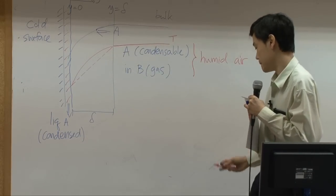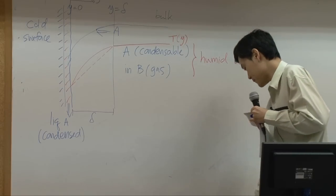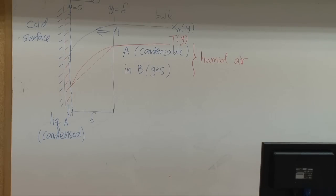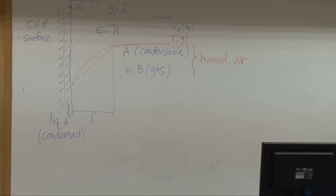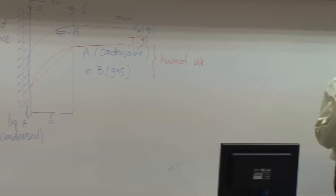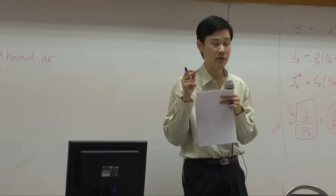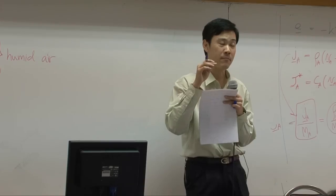So T is a function of Y, and the top one is concentration XA as a function of Y. In this problem, you have mass and energy transport at the same time. That means you need to solve the equation of energy and the equation of continuity simultaneously. But we cannot do that because of the complication of the system and the equations themselves, so we need to choose to solve one particular equation first.